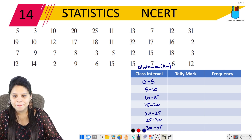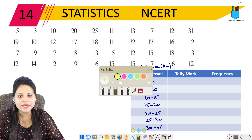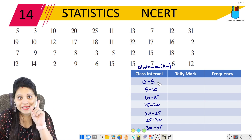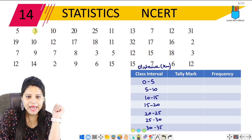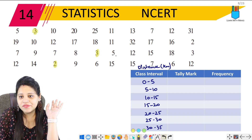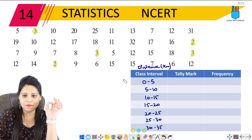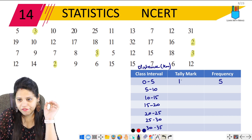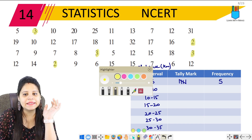So these class intervals are sufficient. Let's start with 0 to 5. I'll take a highlighter so I can mark the data. For 0 to 5, that means 0, 1, 2, 3, 4 — with 5 not included. Counting through the data: 1, 2, 3, 4, 5. So the frequency for 0 to 5 is 5.